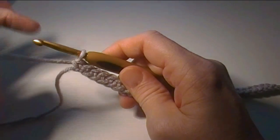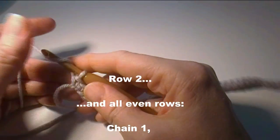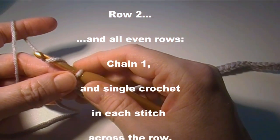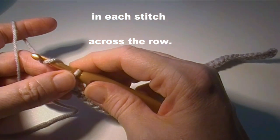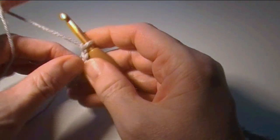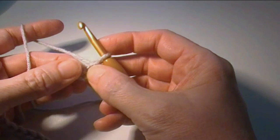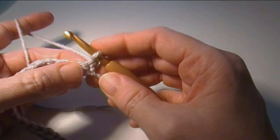Alright, we've finished row one. Now we're going to start row two. All the even rows are the same as row two, which is you chain one, turn your work, and you single crochet in each stitch across.